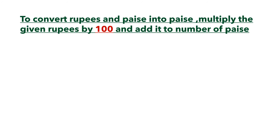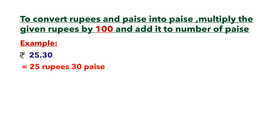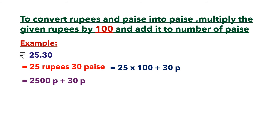To convert rupees and paise into paise, multiply the given rupees by hundred and add it to the number of paise. For example, rupees 25.30 — here 25 is the rupees and 30 is the paise. So 25 multiplied by hundred gives 2500, and we add 30 paise, giving us the answer 2530 paise.